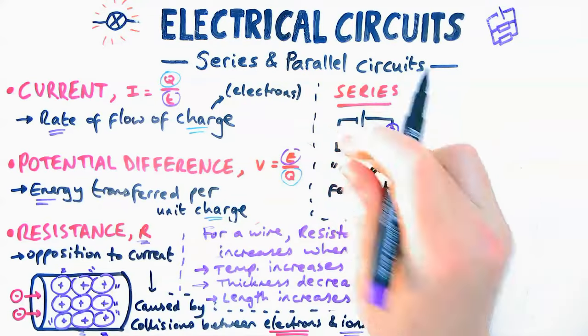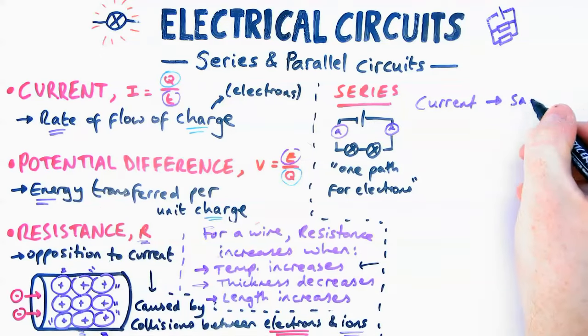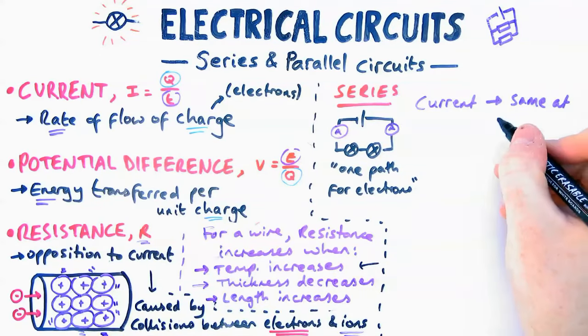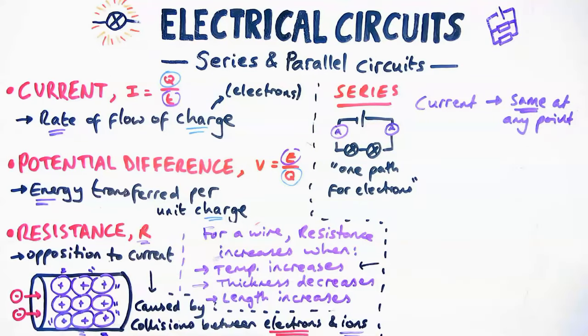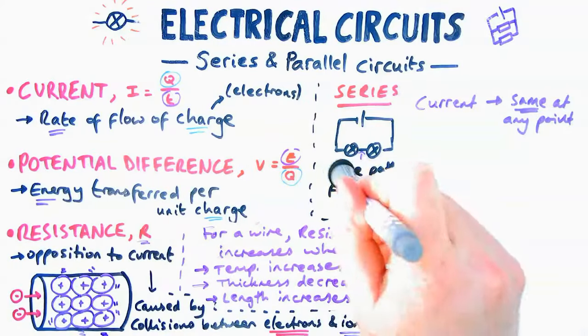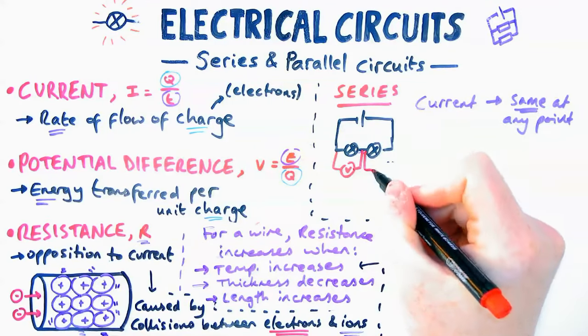Now what this means is that if I was to stick an ammeter at any point to measure the current, the current is going to be the same at any point. The same at any point isn't due to what components are in the circuit. It's just due to the fact the electrons, all of them, have to go all around the circuit at the same rate. So therefore it's going to be the same regardless of where it is.